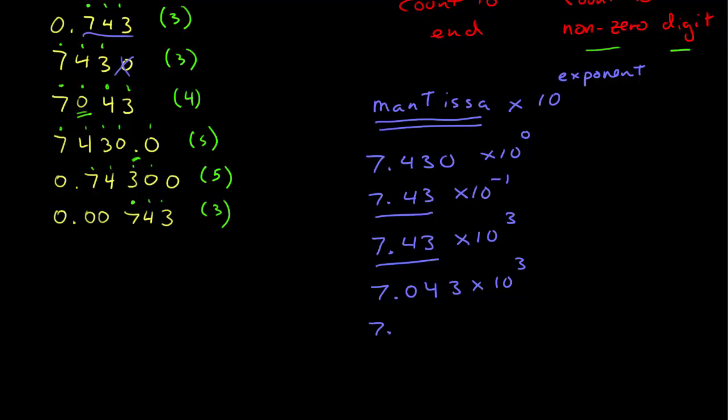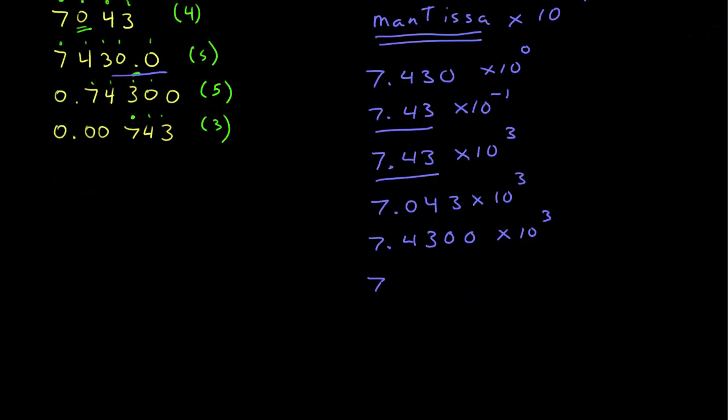And now I have 7.4300. I need all of them for this one times 10 to the 3. And now 7.4300 times 10 to the minus 1. Again, I need all of those numbers in the mantissa because they're all significant.